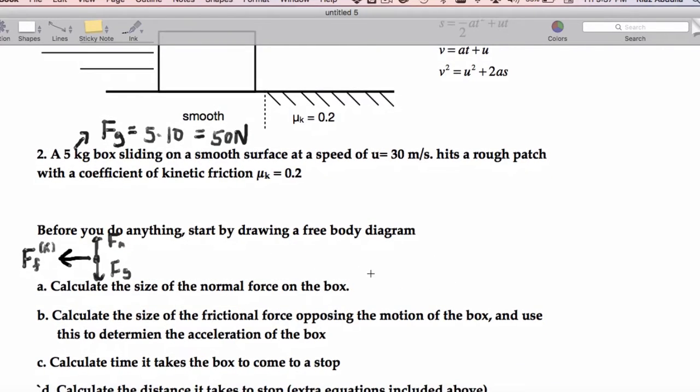So let's get the size of the normal force. We'll balance forces. So the normal force minus the weight force equals zero. And so when we solve, that's how we're getting a weight force of 50 Newtons.